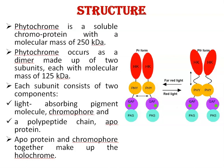Next is structure. Phytochrome is a soluble chromoprotein with a molecular mass of 250 kDa. Phytochrome occurs as a dimer made up of two subunits, each with a molecular mass of 125 kDa. Each subunit consists of two components: one is the light-absorbing pigment molecule, that is the chromophore, and the second is a polypeptide chain called apoprotein. Apoprotein and chromophore together make up the holoprotein. This is the inactive PR form of phytochrome.